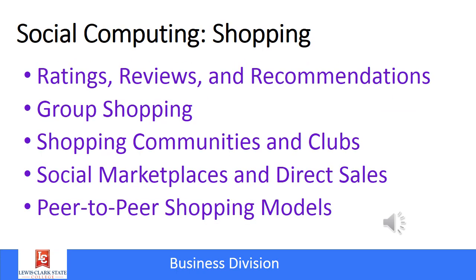Social computing has also changed the shopping experience for consumers. One of the most powerful ways is the ability to look up ratings and reviews — before you buy a product, you might go to Amazon and look at ratings and reviews or do it through Google. There are also group shopping sites such as Groupon and Living Social that offer discounts for a specific time. And then there are peer-to-peer shopping models that have replaced the old classified ads, replaced with things like Craigslist or a for-sale group on Facebook.